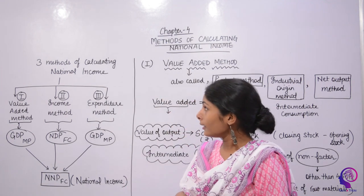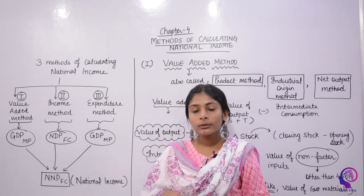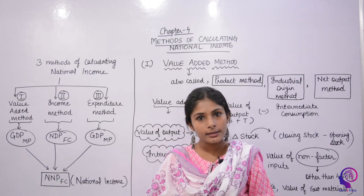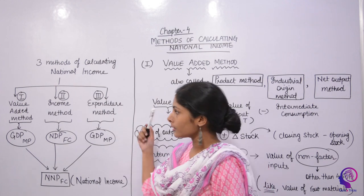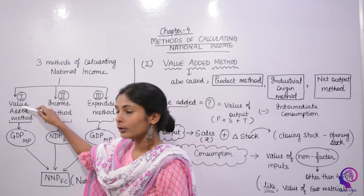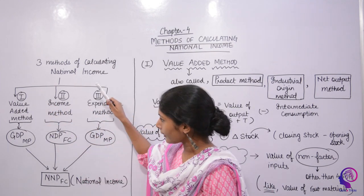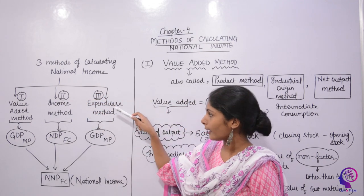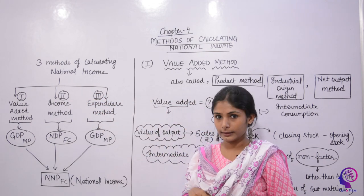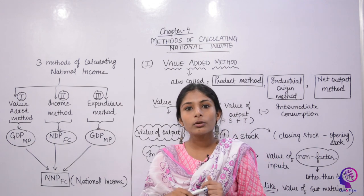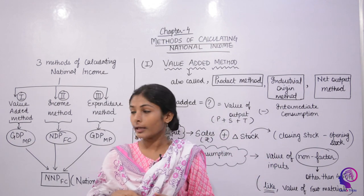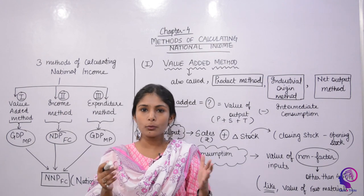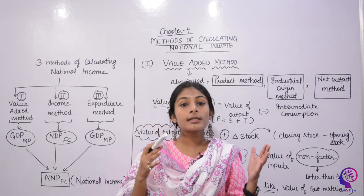Now let's see what methods of calculating national income exist. There are three methods: the first is the Value Added Method, the second is the Income Method, and the third is the Expenditure Method. As we deal with these methods in detail, we will use some formulas and arrive at certain results.